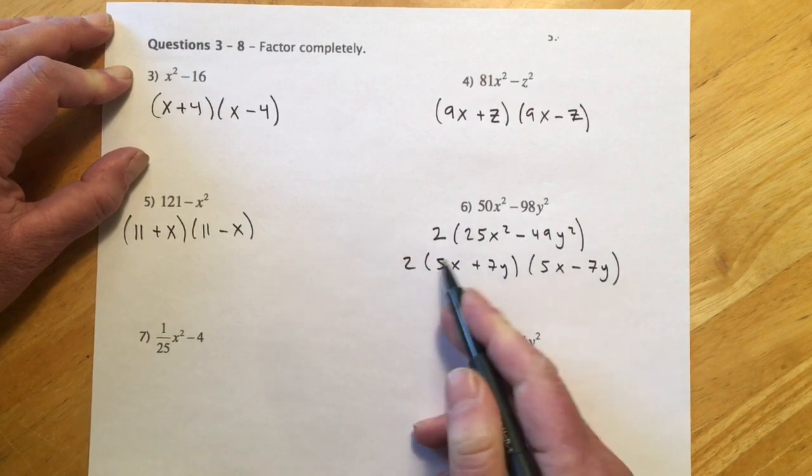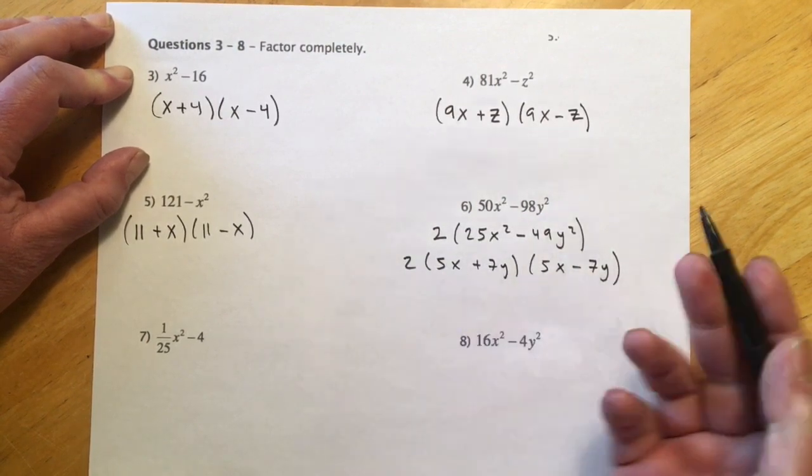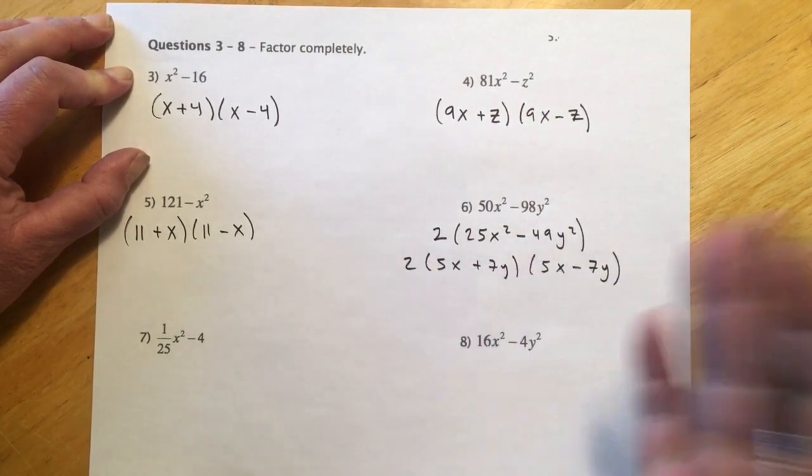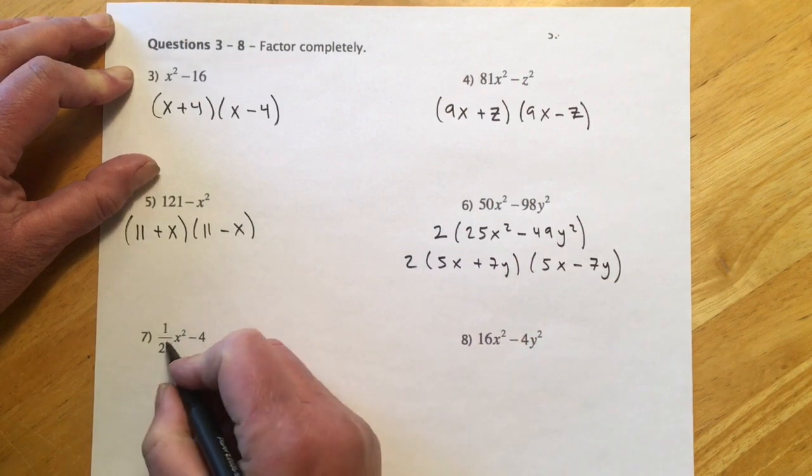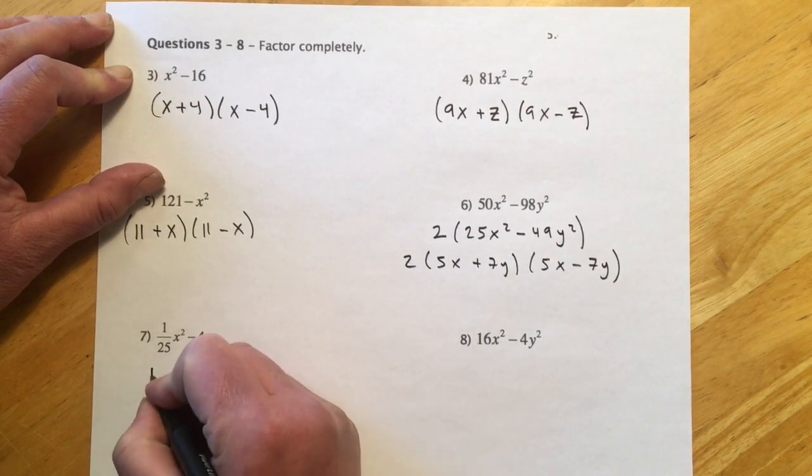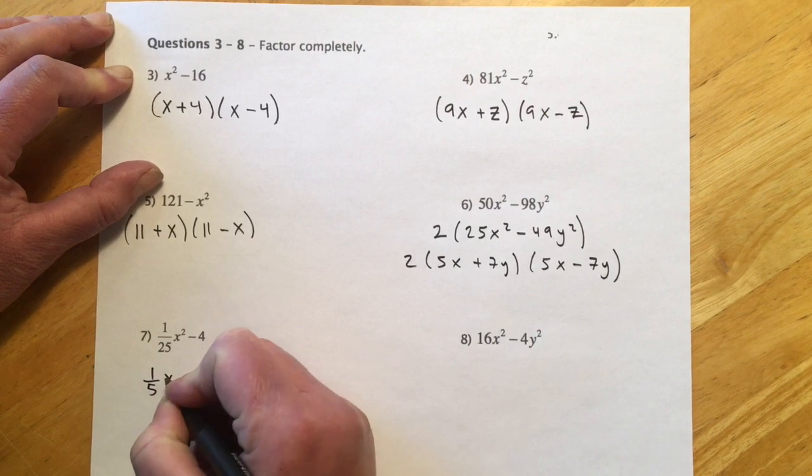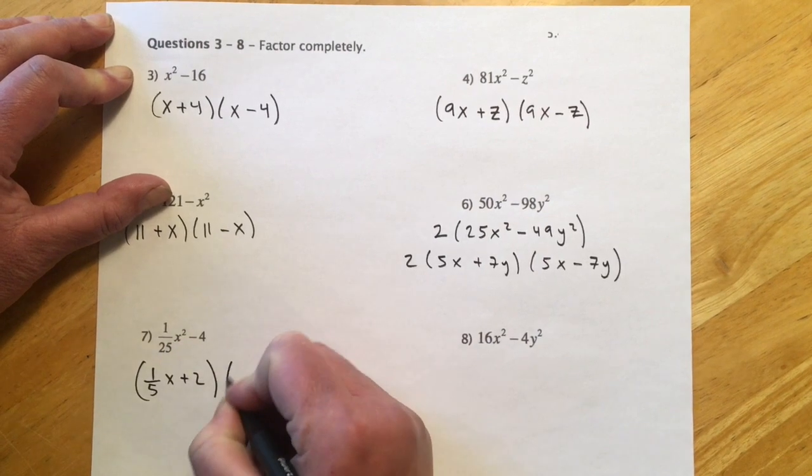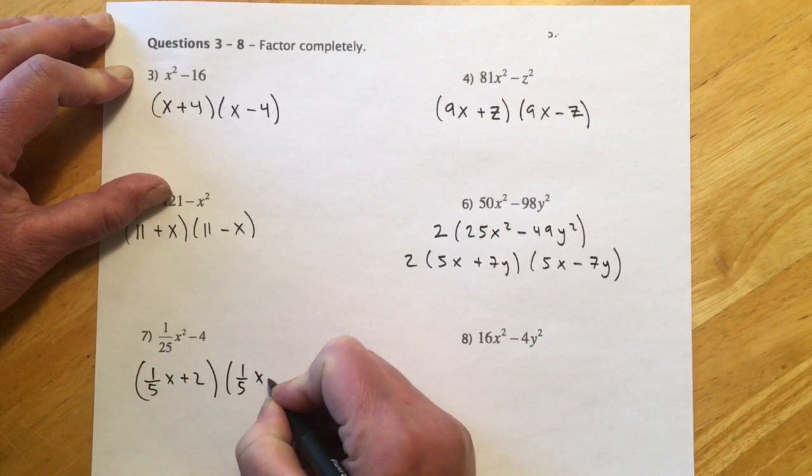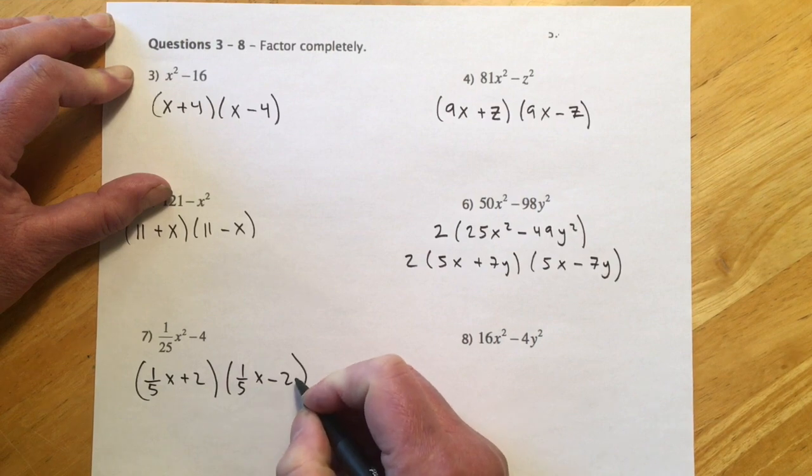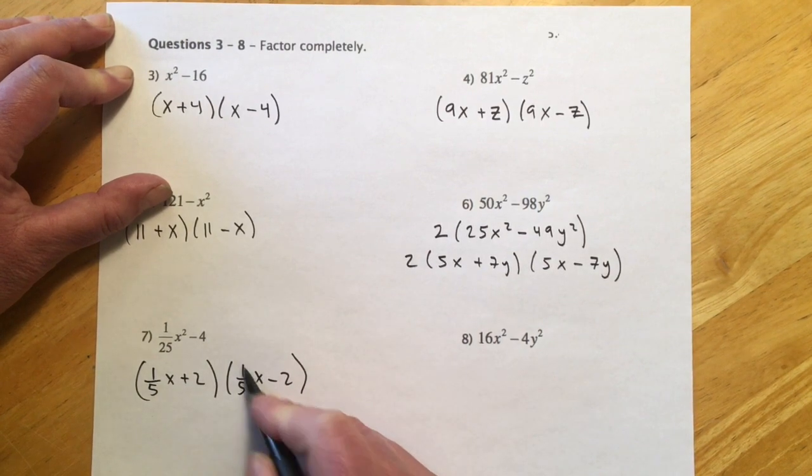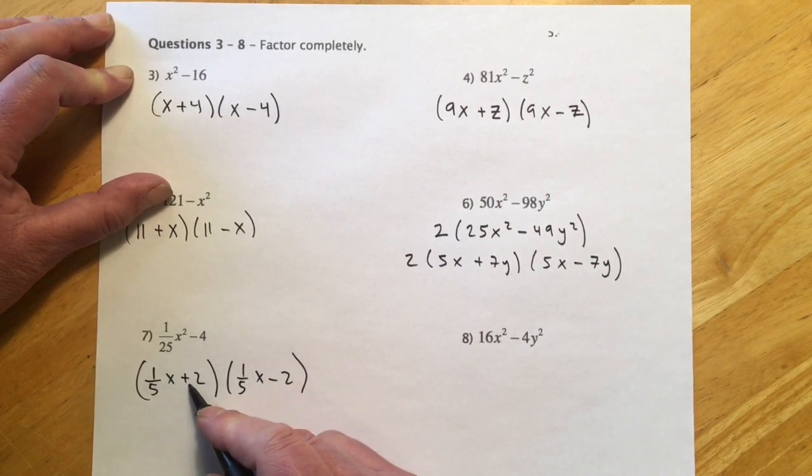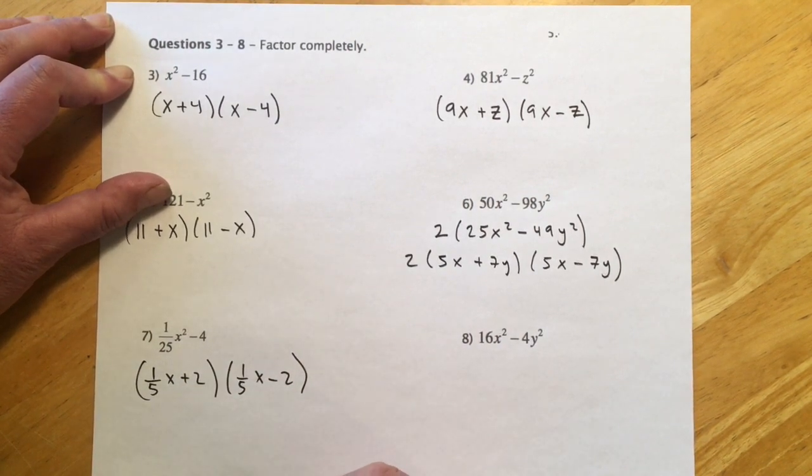Any of these you can check by foiling. These are pretty easy once you get the hang of it, so not a whole lot of reason to check, but you always can. Number 7, so fraction is not a big deal. It's just going to be 1/5x, because 1/5 times 1/5 makes 1/25, and it'll be plus 2 and 1/5x - 2. If you foil that back out, you'll get your 1/25x² up front, you're going to get -2/5x and +2/5x, those cancel, minus and plus gets you -4.